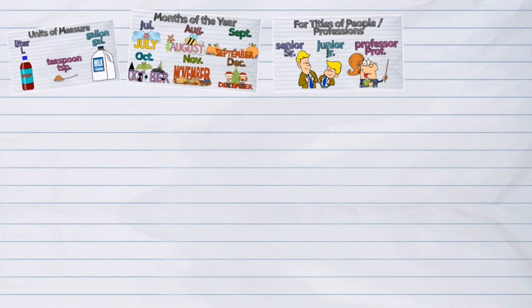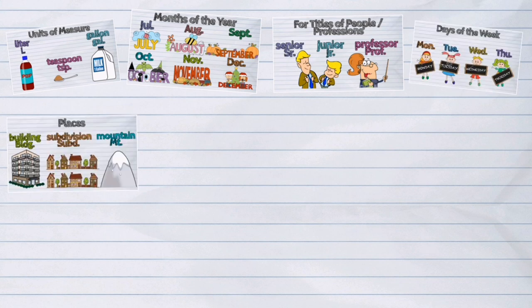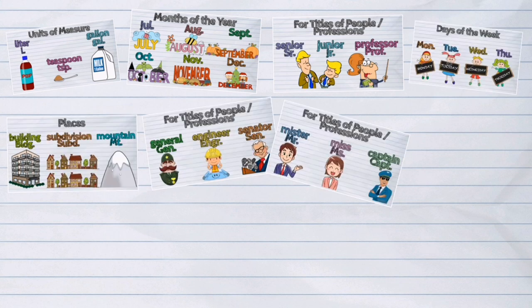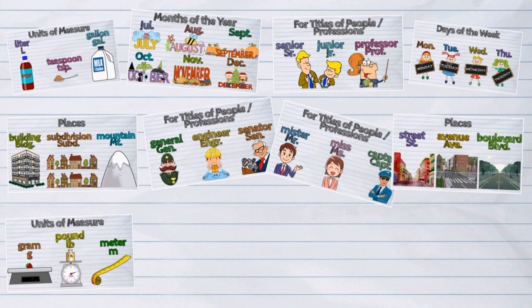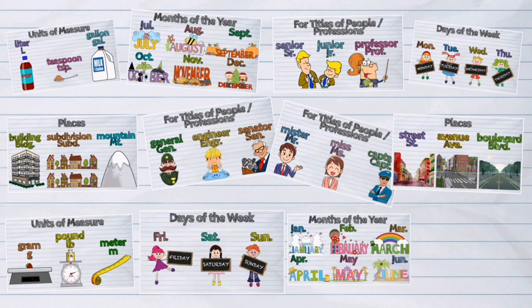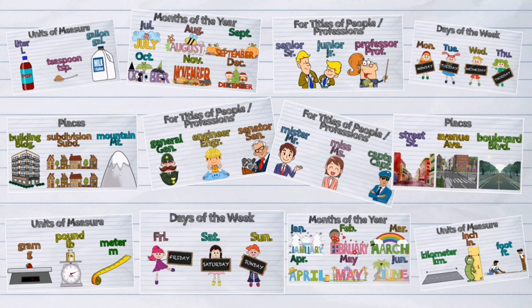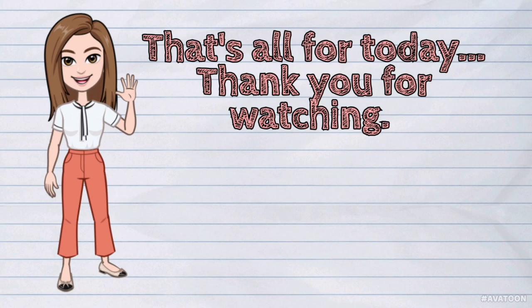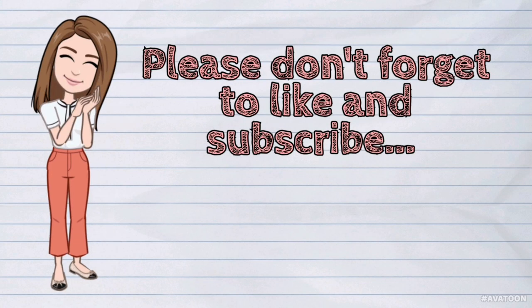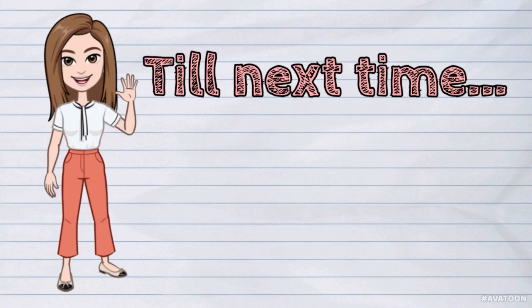And those were the examples of abbreviated words. Again, an abbreviation is a shortened form of a word. It is usually done to take less space in a document or a selection. That's all for today. Please don't forget to like and subscribe. Till next time.